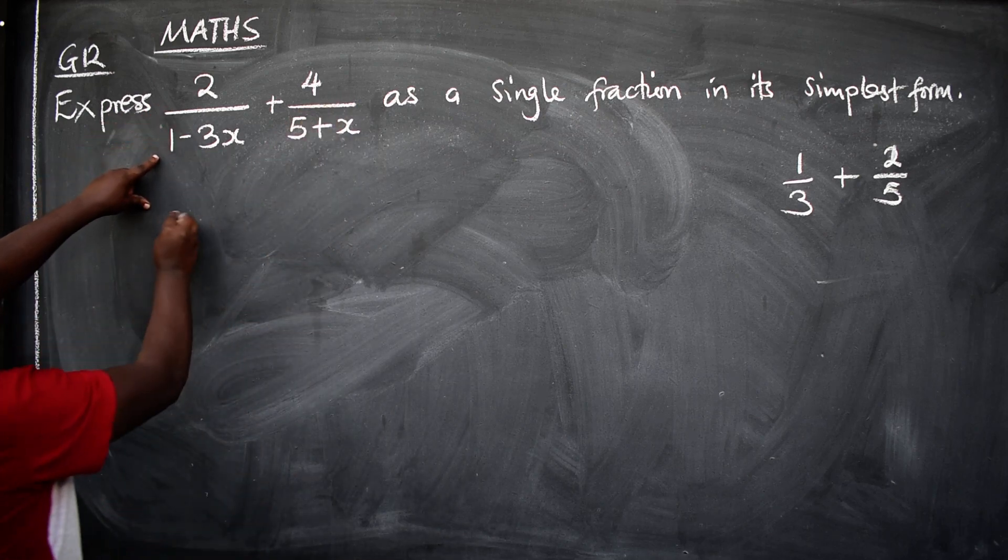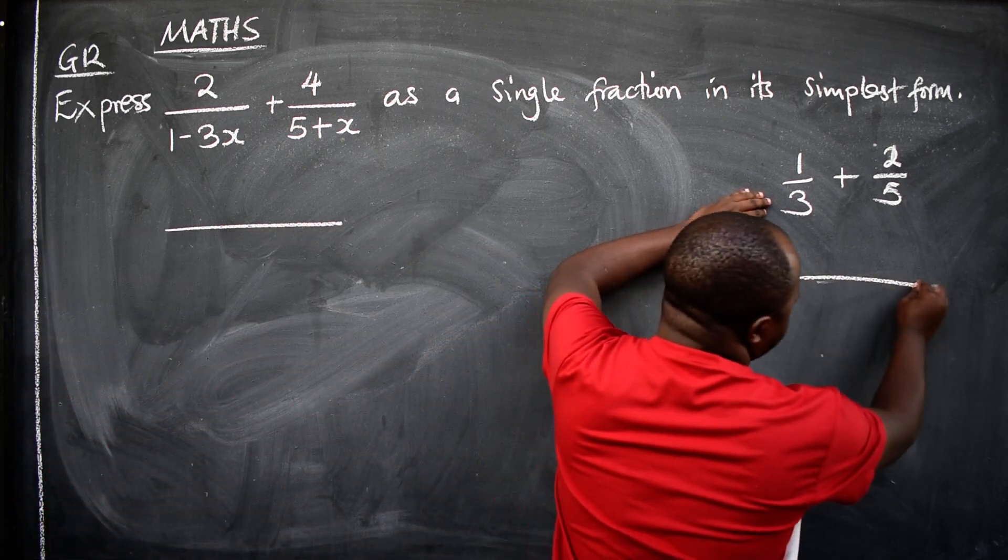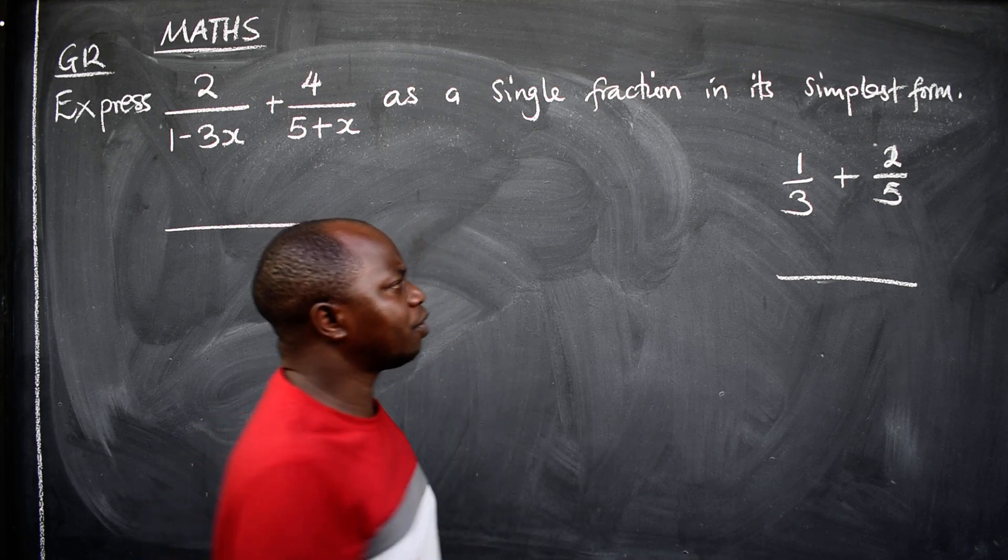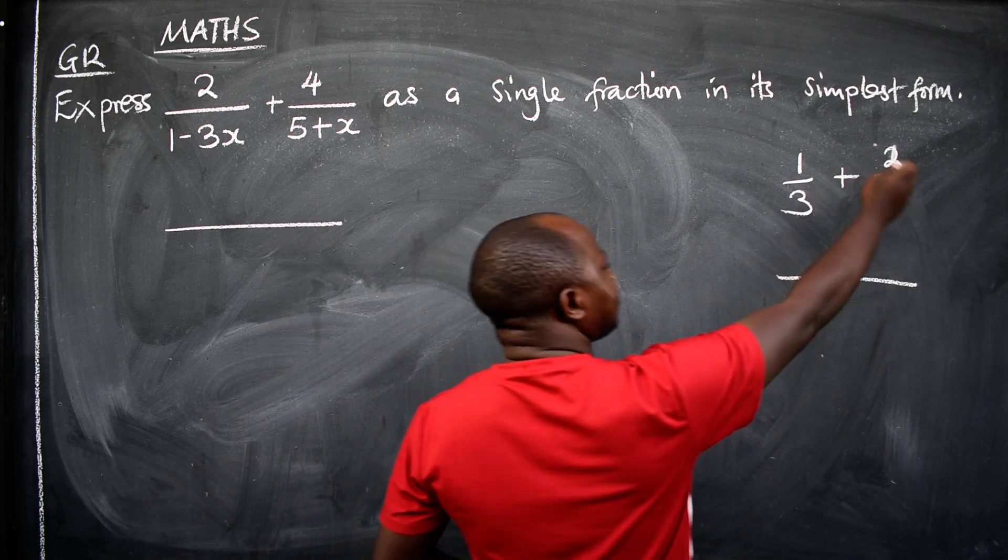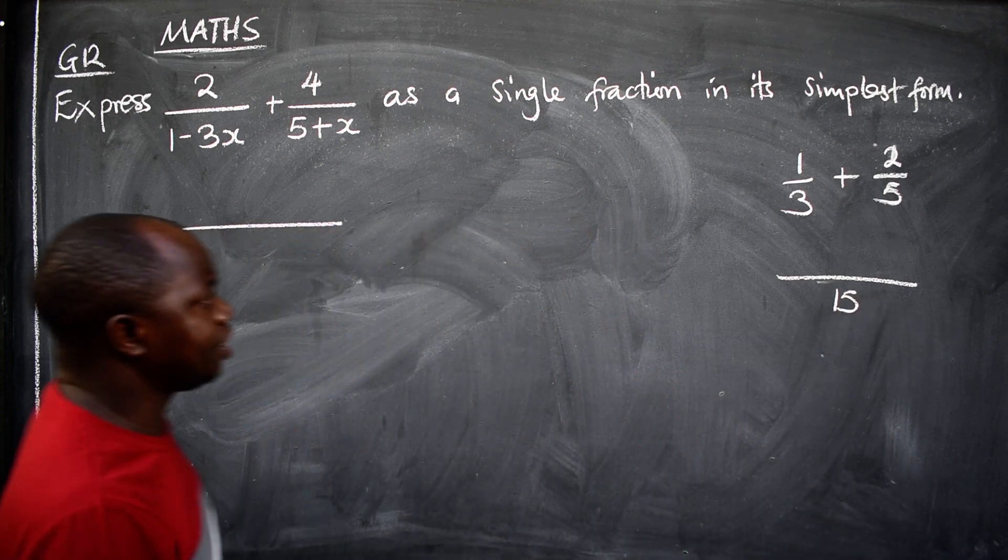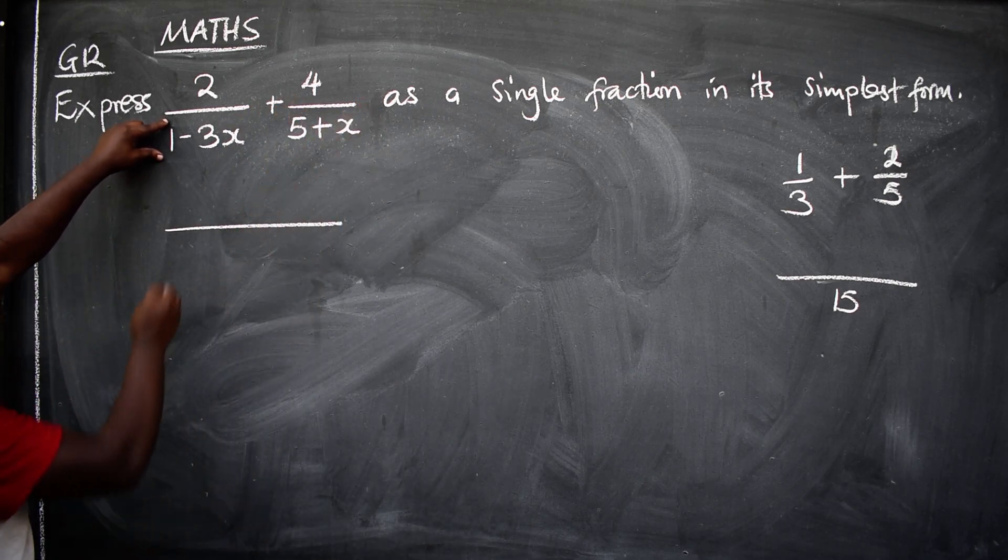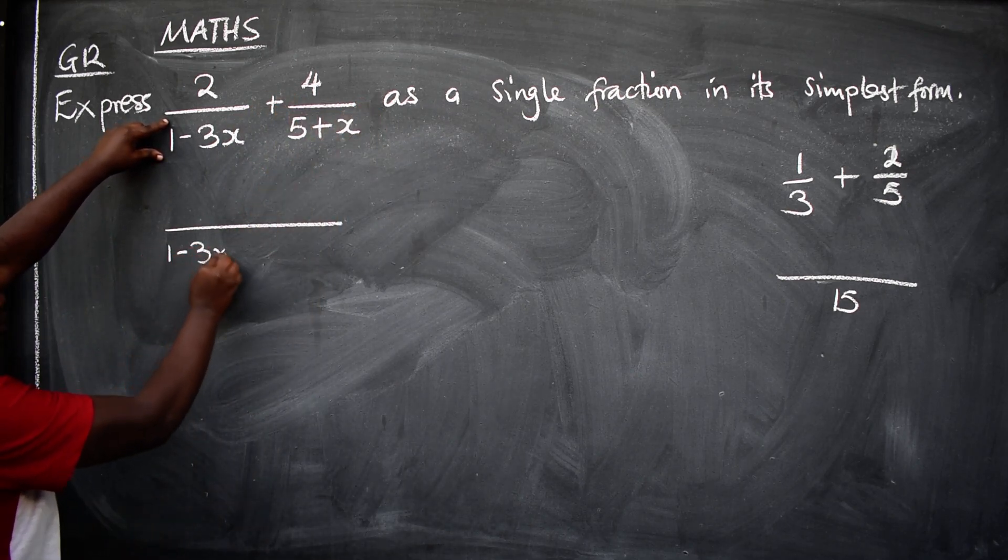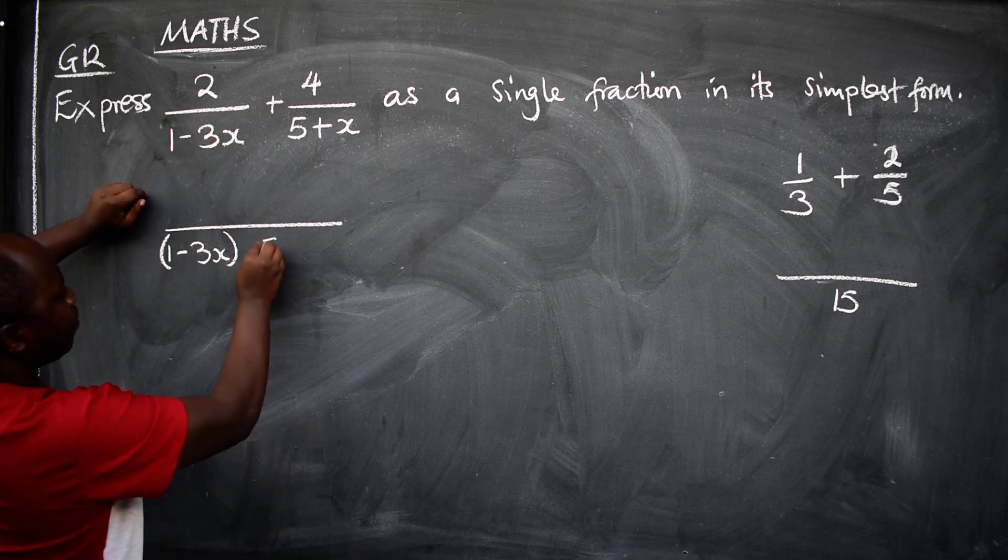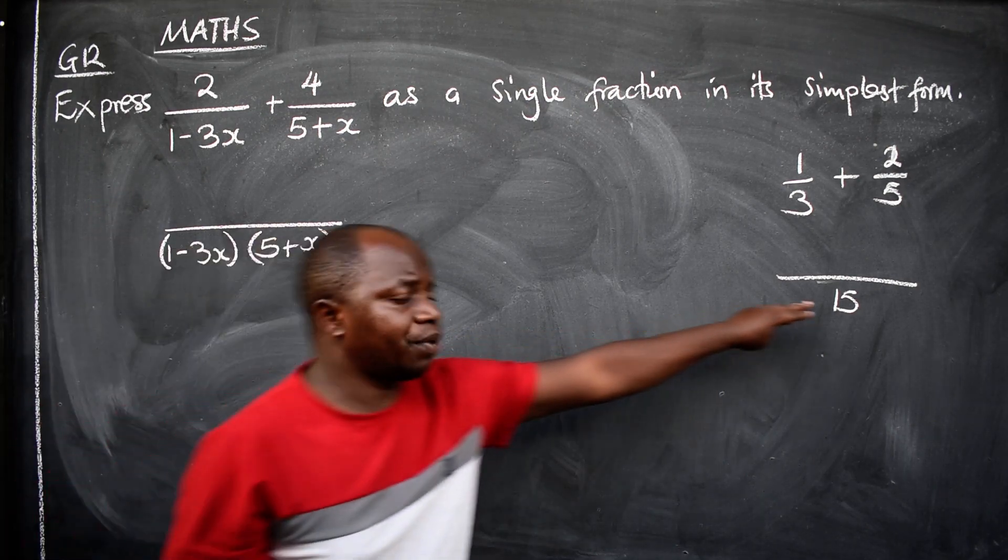So what you need to do is to draw a line, just like you can do here. Draw a line, then the common multiple, you just multiply the two numbers, 3 times 5 in this case to give us 15. So here you multiply this expression and this, you are going to get 1 minus 3x, put that in brackets, also this one, 5 plus x, put it in brackets. That's the way we do it.